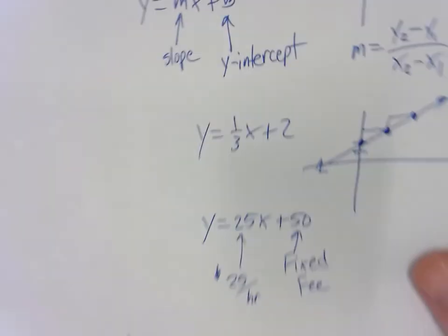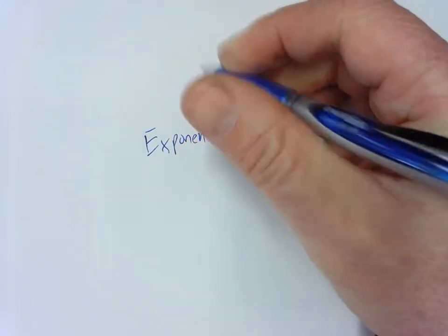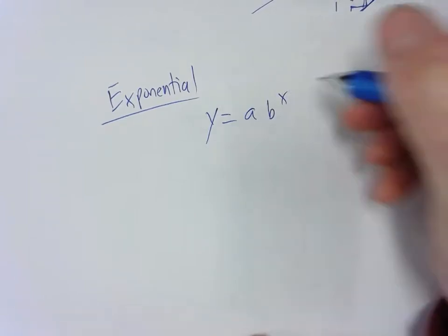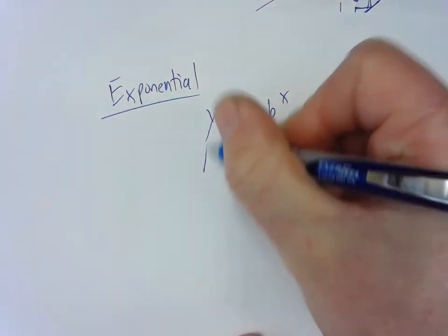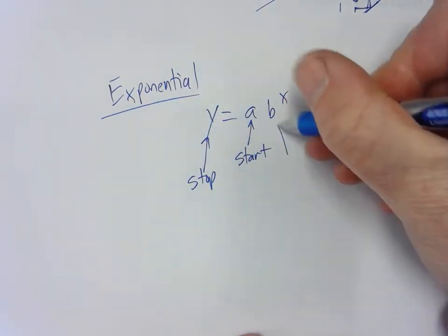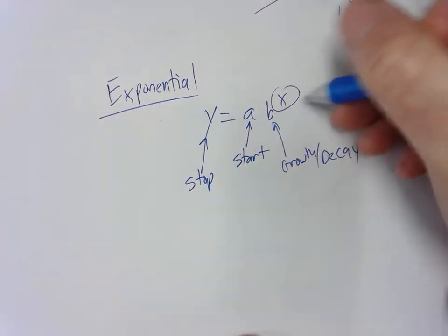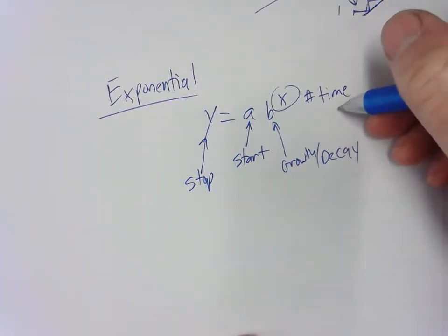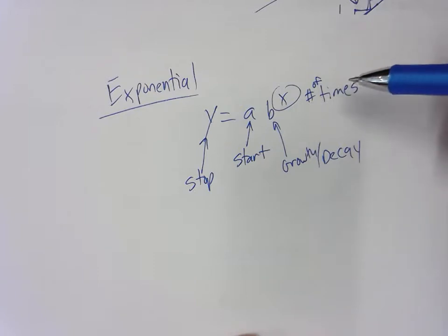The last kind of problem you have to deal with is exponential. Exponential is for multiplying numbers over and over again. y equals a times b to the x is your typical exponential formula. The a is your starting point, b is your growth rate or decay, and x is the number of times you're doing the growth or decay — like three days, eight months, or two years.